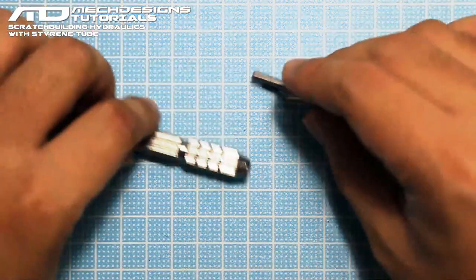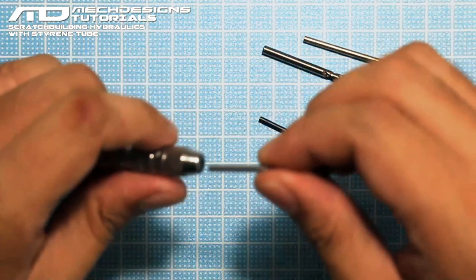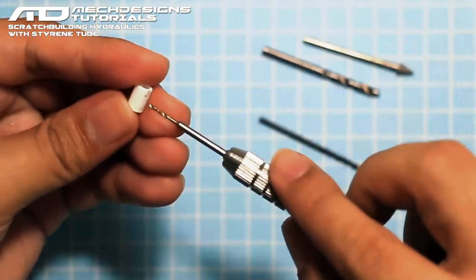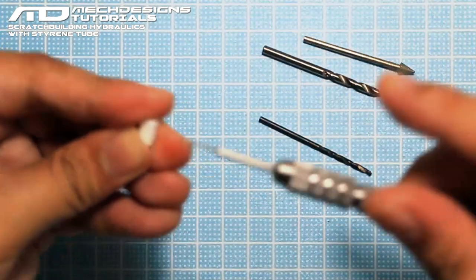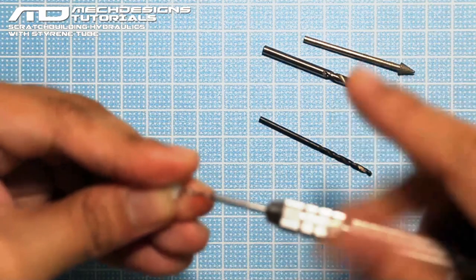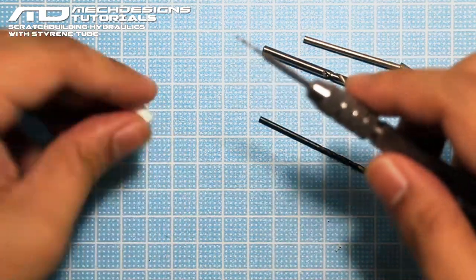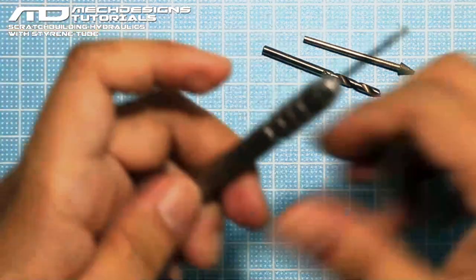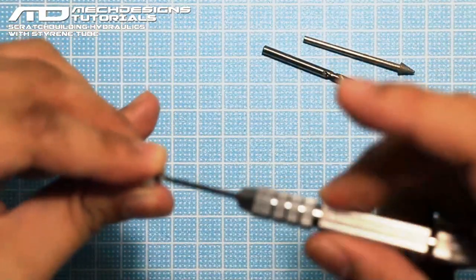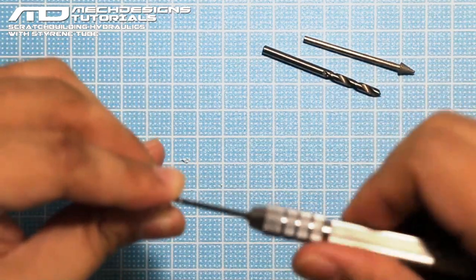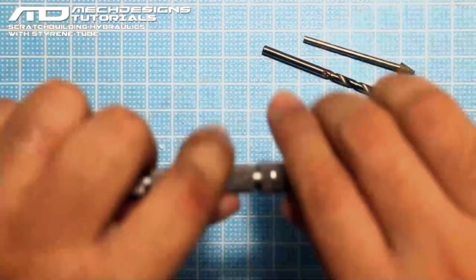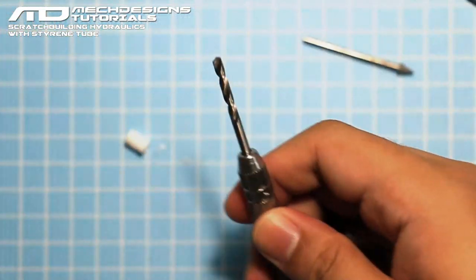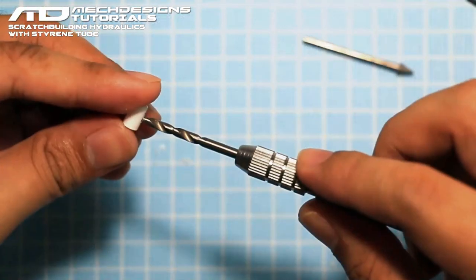Next we're going to use the pin vise and the drill bits. So first use the thinnest one or the smallest one that you have, and we're just going to mark the middle. So let's make a hole at the middle. Next you move on to the second bigger bit and make the hole bigger, then move on to the next one and again let's make the hole bigger.